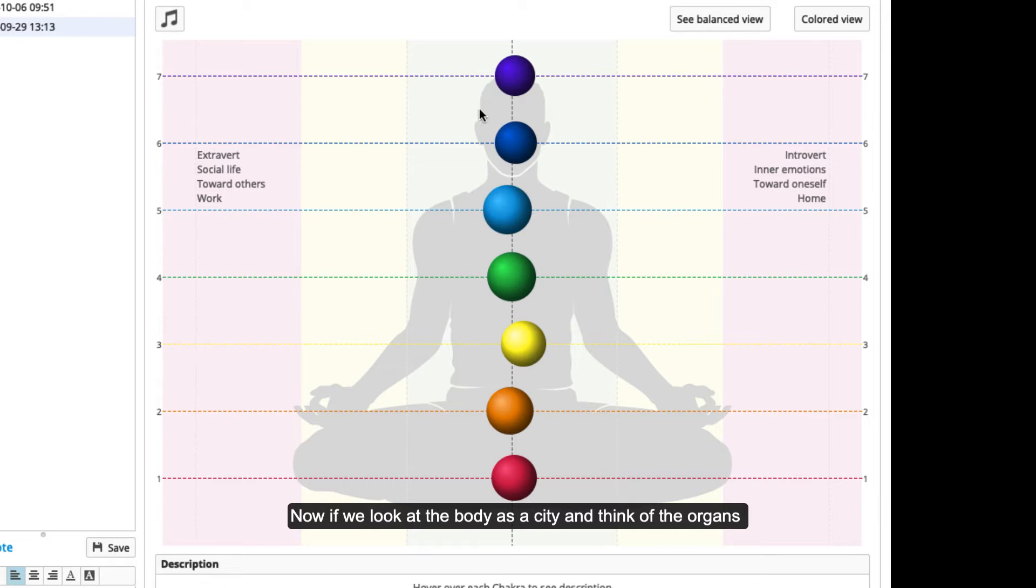Now if you look at the body as a city and think of the organs as houses located within the city, for the city to be functional we need power or energy, so we have power centers to supply power to different houses. The power is distributed to the houses from the power centers through power lines to each house.